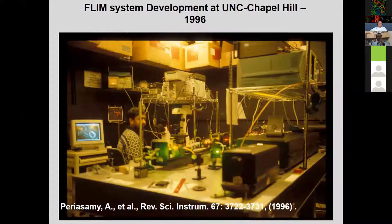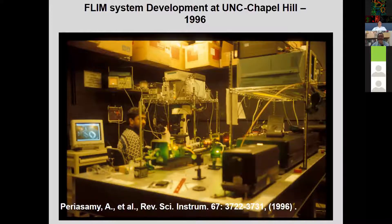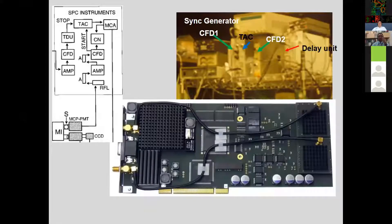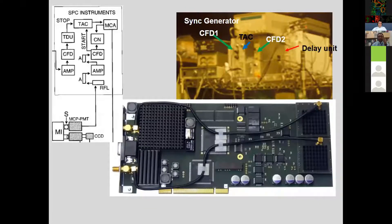As Ali mentioned, I built a lifetime imaging system in 1996. At that time, there was no company offering lifetime imaging systems or electronics — you had to build them yourself. Now there are a number of companies available. This is the Becker and Hickl board; you can easily insert it in your computer. If you have a pulsed laser, you can do time-correlated single photon counting. All the data in my presentation is based on time-correlated single photon counting.